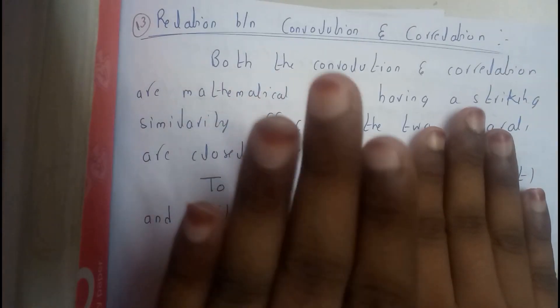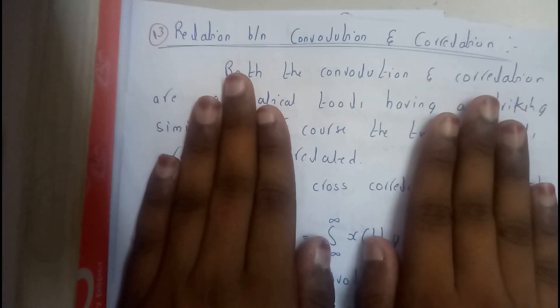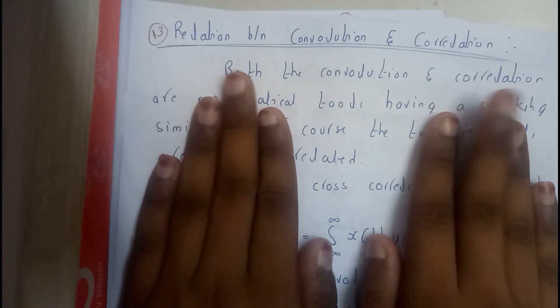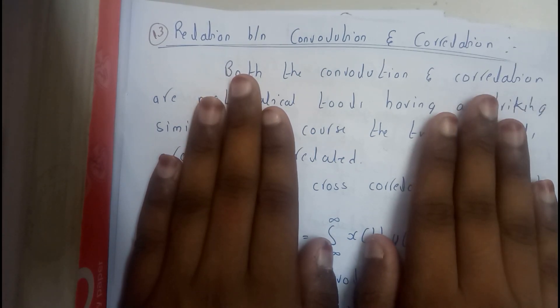Basically, in convolution, when there are two signals, you will be first changing the parameter. In both the situations, convolution and correlation, we will be changing the parameter.